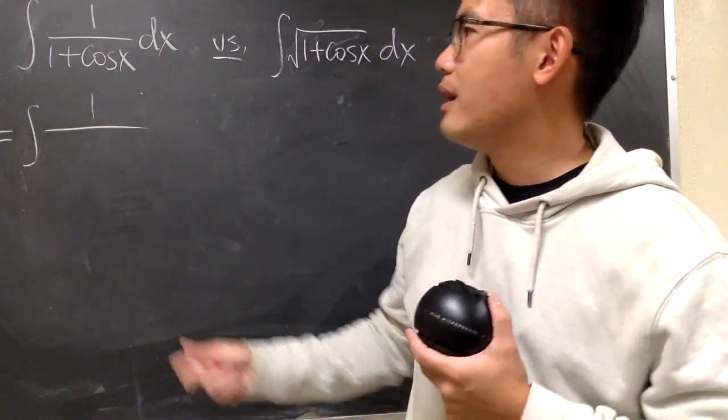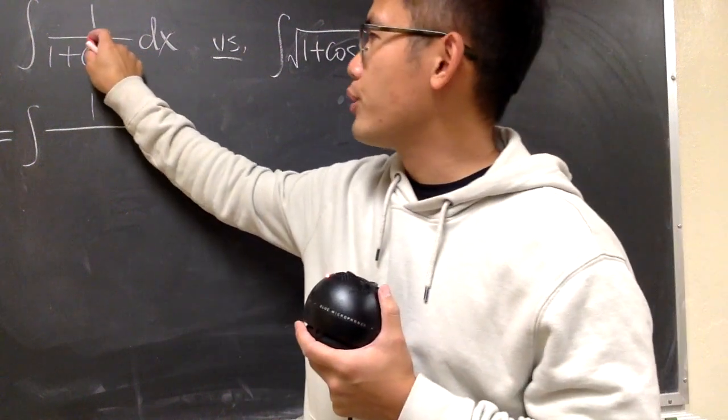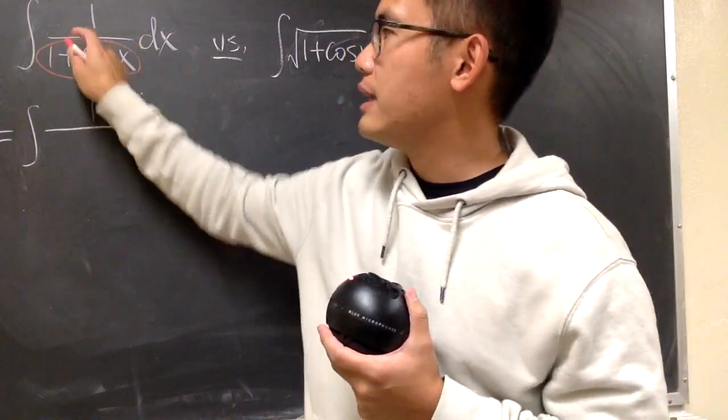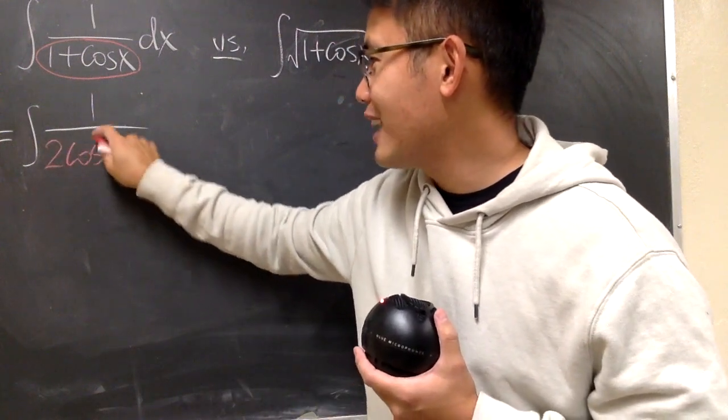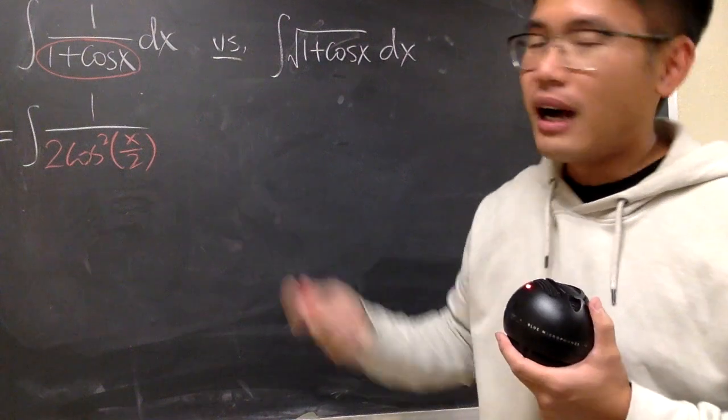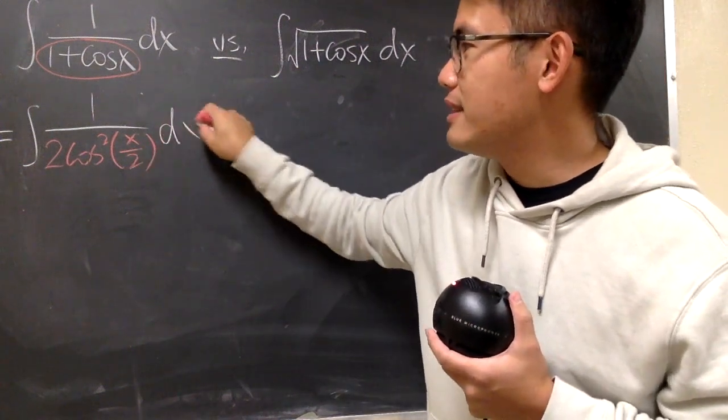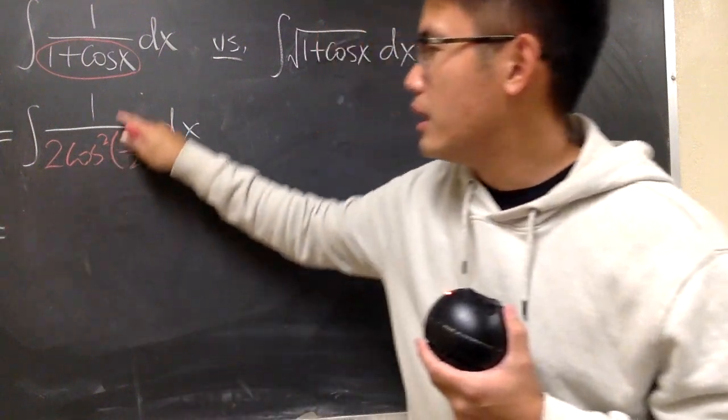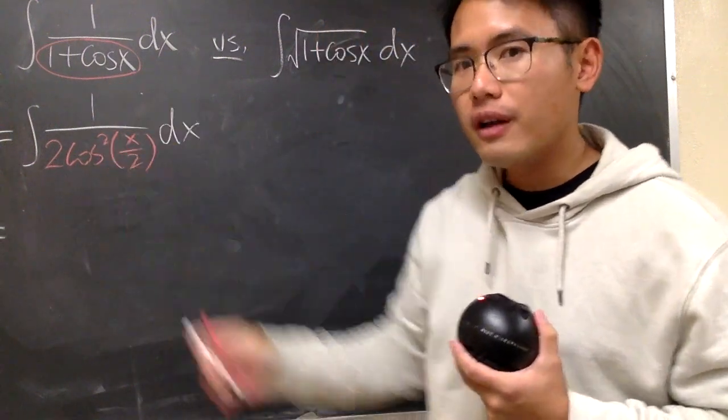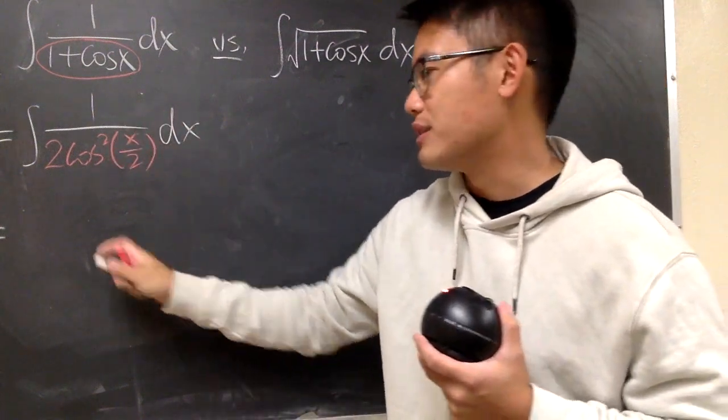Anyway, the first one, we have 1 over, and look, we have that 1 plus cosine x, right? Let me tell you, whenever we have this, this happens to be the same as 2 times cosine squared of x over 2. I am not making this up. This is equal to that.